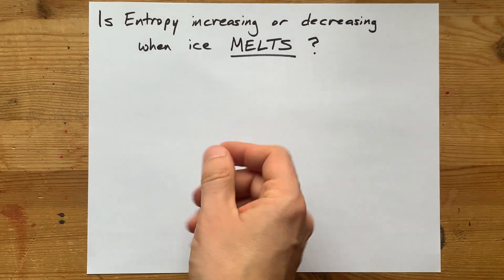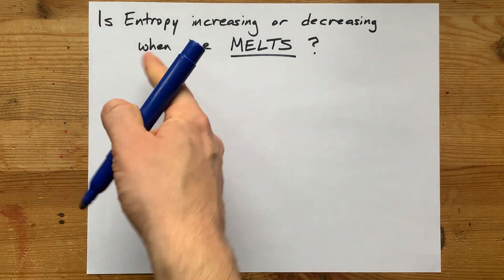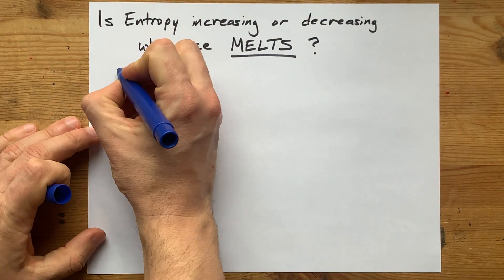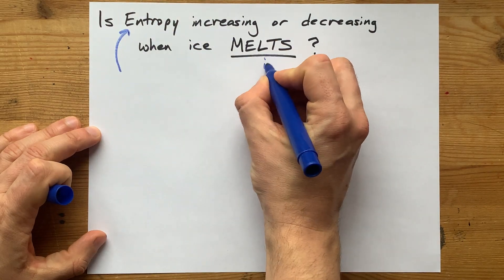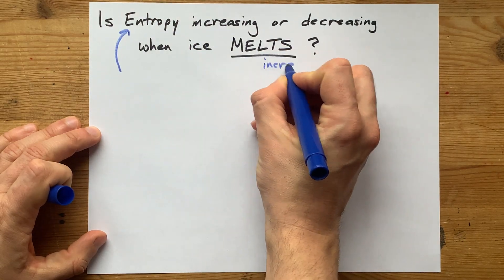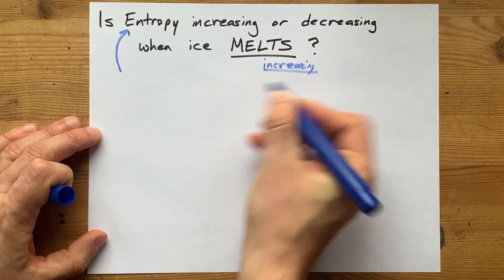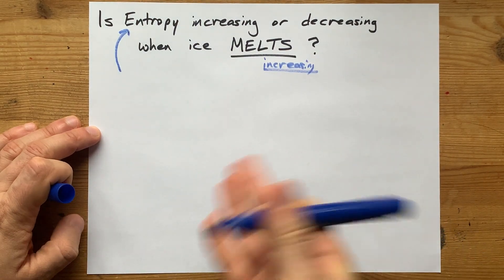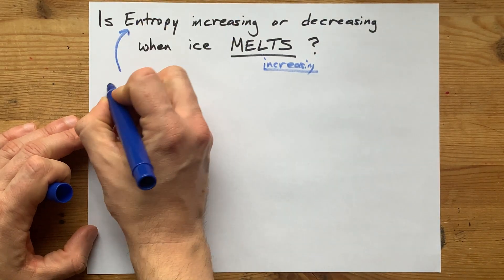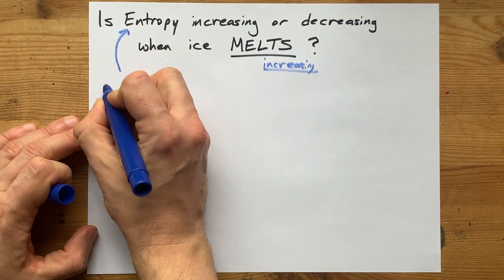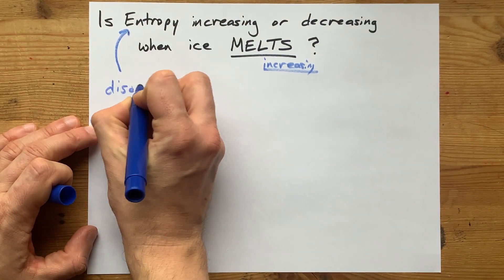Is entropy increasing or decreasing when ice melts? The official answer is that it is increasing, just like the temperature is, presumably. That's because entropy is a measure of disorder.